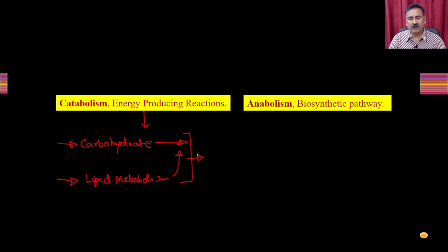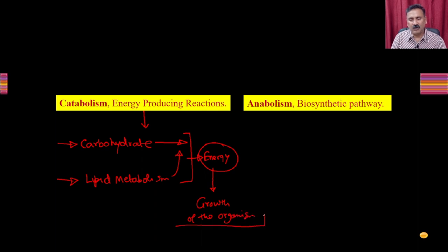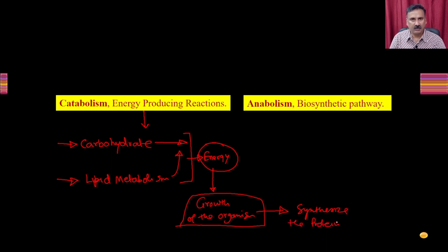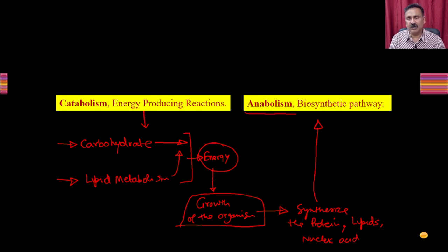Both of these pathways produce a large quantity of energy, which can be used for the growth of organisms. When you want to grow, you have to synthesize new biomolecules — you have to synthesize proteins to prepare new cells, lipids for the plasma membrane, and nucleic acids. All these synthesis reactions are collectively called anabolic reactions, which cover the biosynthetic pathways.